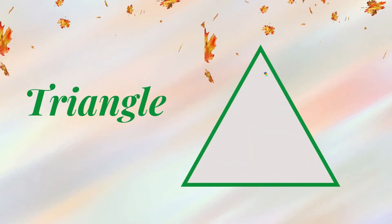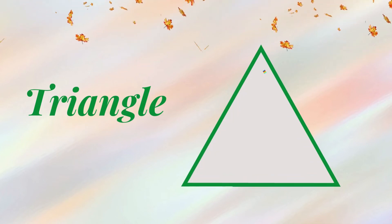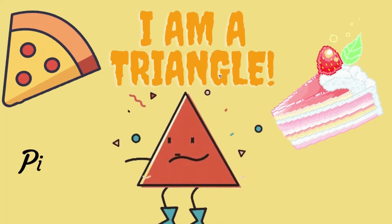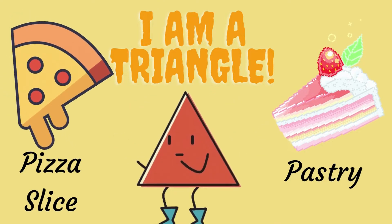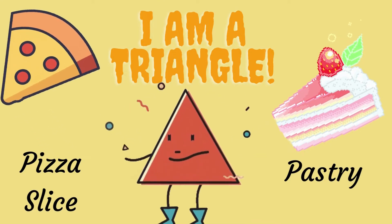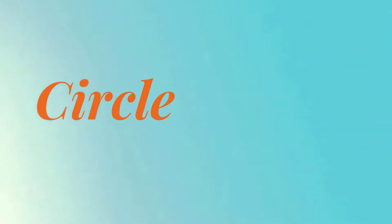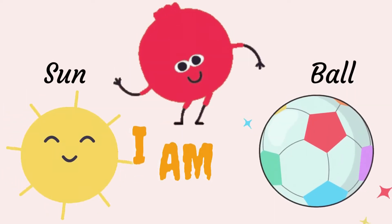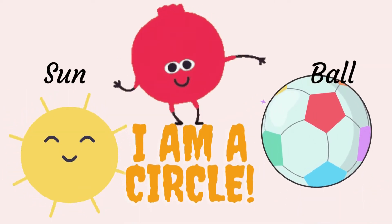Triangle - it has three sides. I am a triangle. Pizza slice and yummy pastry are in triangle shape. Circle - it has no sides and is round in shape. I'm a circle. Sun and ball are in circle shape.